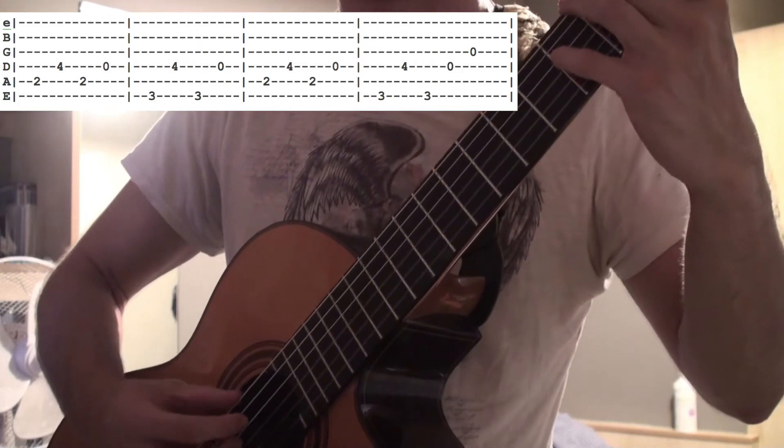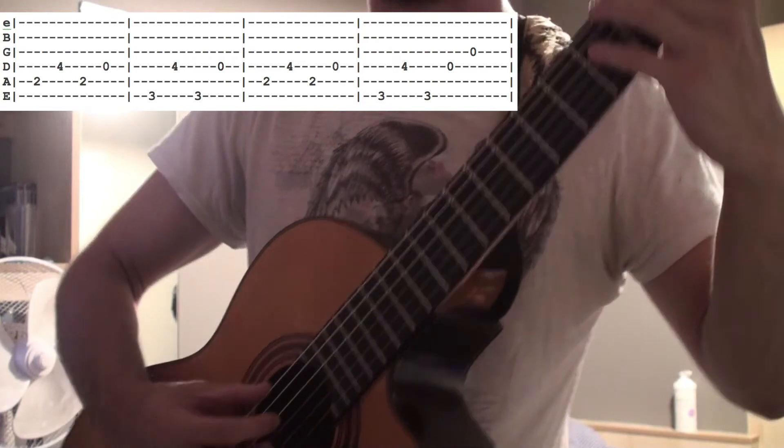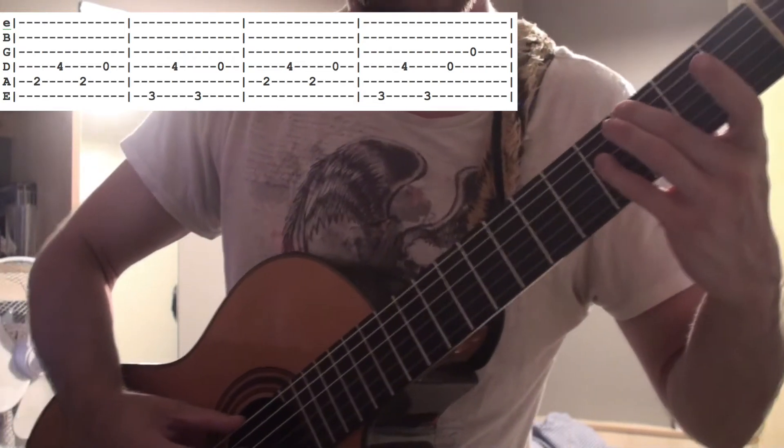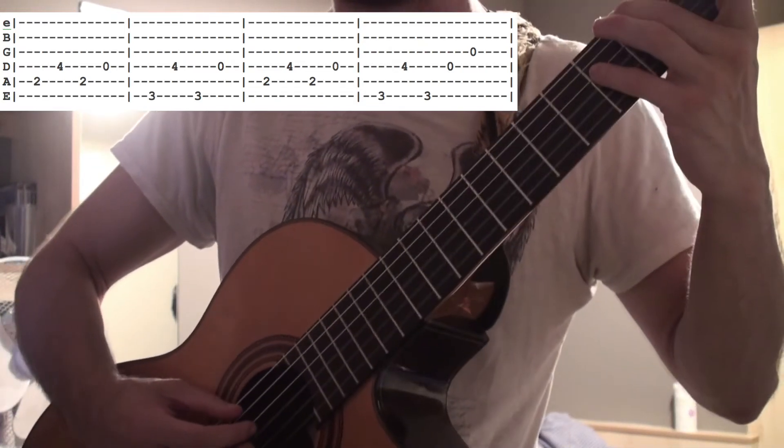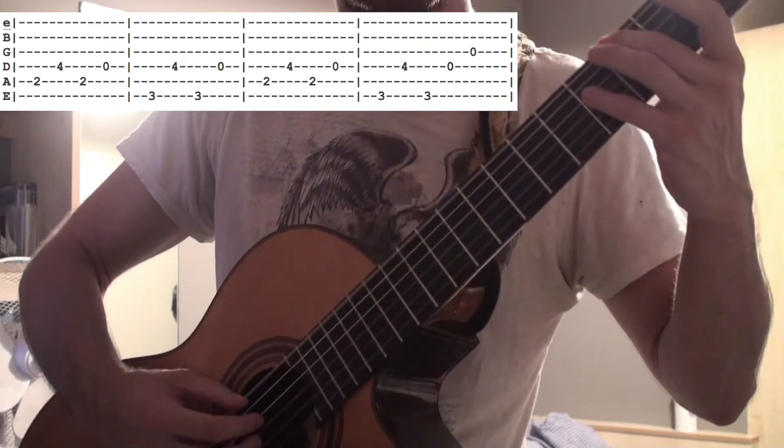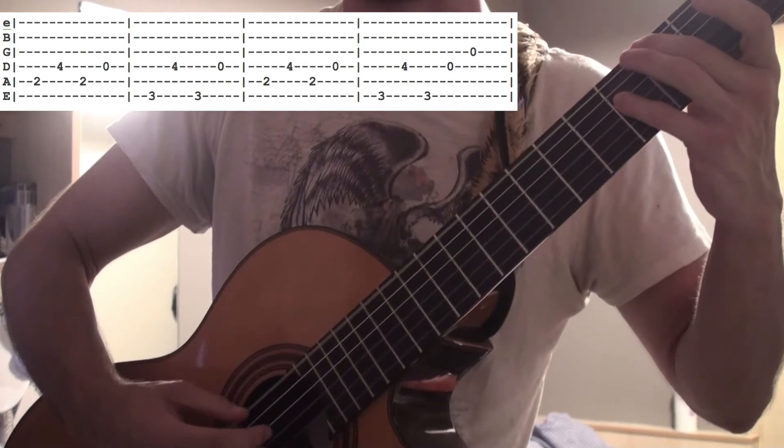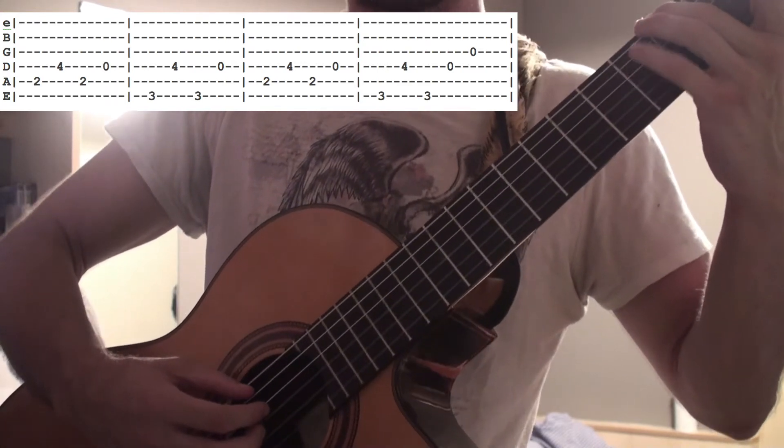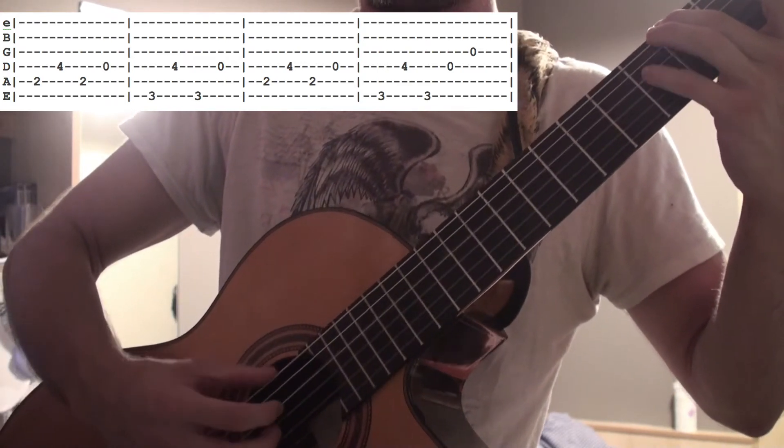And then it changes to this. So that's on your low E, 3rd fret, on your D string, 4th fret. So again, it's the same kind of thing. You do the E, the D, then the E again, and then when you go back to do the D, you take your finger off and just do an open.